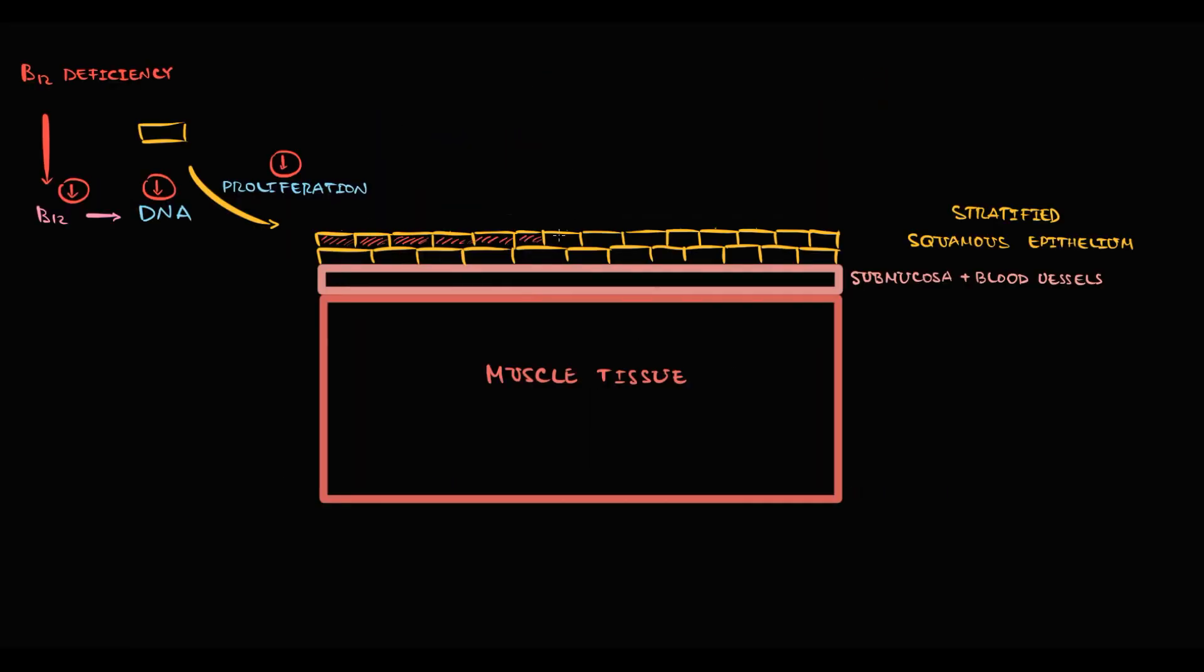As epithelial atrophy progresses, thickness of the epithelium decreases. First of all, such thin epithelium is very prone to injury.